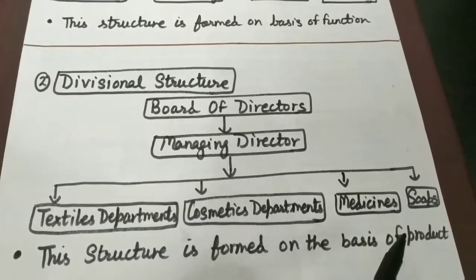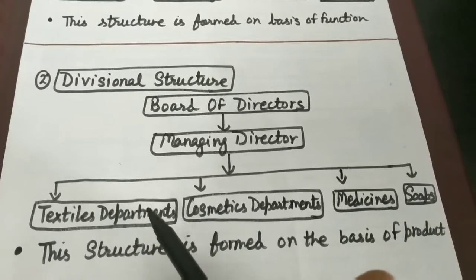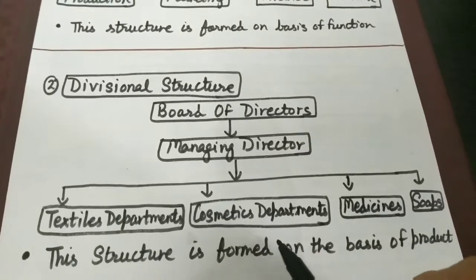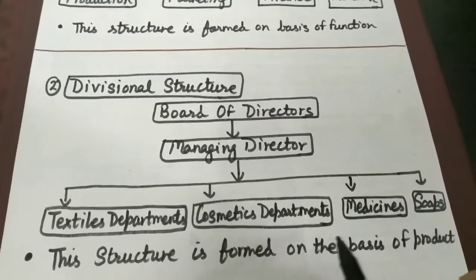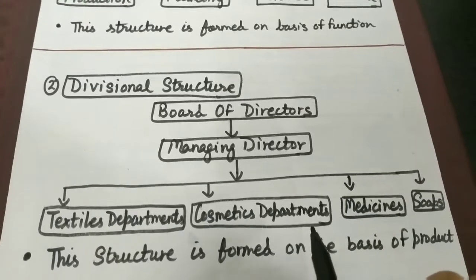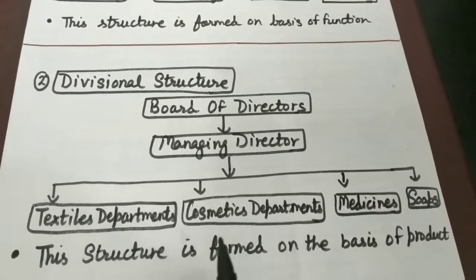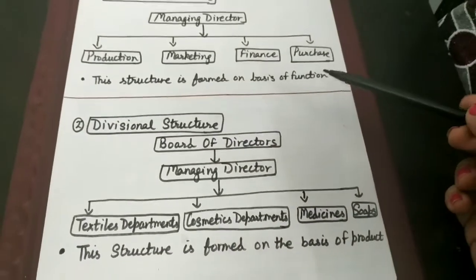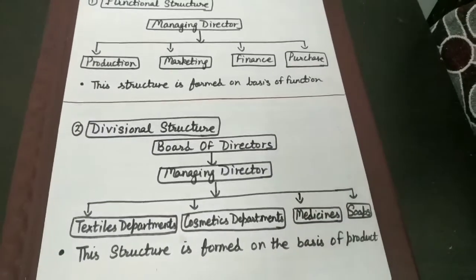Toh ye chaar different divisions hain, chaar different departments hain, and these different product divisions are performing different functions under them. Yaani ki jo cosmetic department hai, ye production function bhi perform kar rhi hai, purchasing function bhi perform kar rhi hai, financing, human resource — basically all these departments are individually performing different functions in their particular department to attain their own objective of the organization. This is called divisional structure. Divisional structure mein formation ki organization structure hoti hai on the basis of product, aur functional structure mein organizational structure form hoti hai on the basis of functions being performed within the organization.